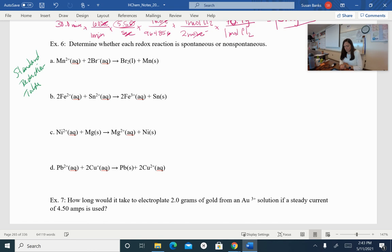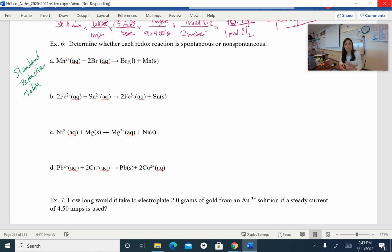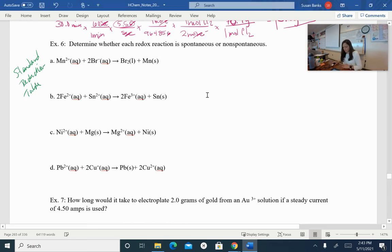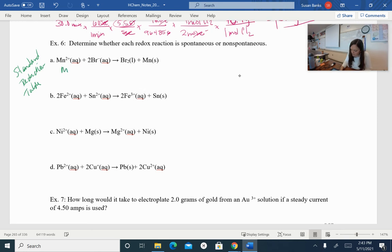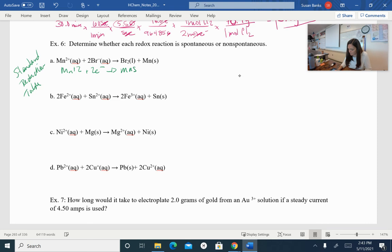We have manganese and two bromides going to bromine and manganese solid. So what we need to do is we need to look up manganese 2 going to manganese, and we need to look up bromine or bromide going to bromine. So if I look up manganese plus two plus two electrons going to manganese solid, I get a voltage of negative 1.185 volts.